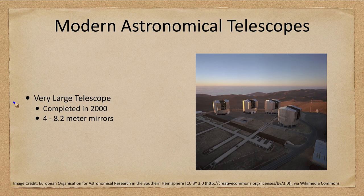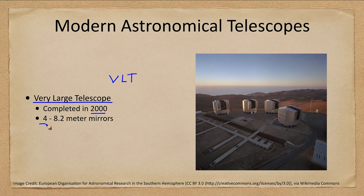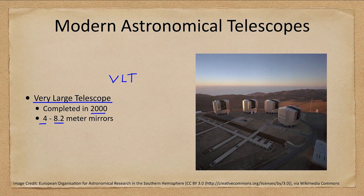Now let's look at a few newer ones. This is the Very Large Telescope, sometimes called the VLT, completed in 2000. It has four telescopes — you can see the four domes — which can be used together if needed, and they have eight-meter mirrors. Compared to the five-meter mirror of the 200-inch Hale Telescope, these are significantly larger. The larger the telescope, the fainter the objects we can see, and with adaptive optics we can also get very good resolution out of them.